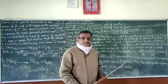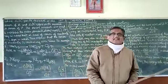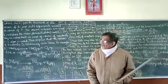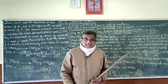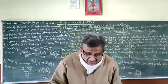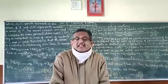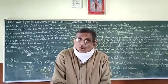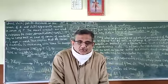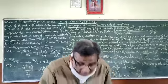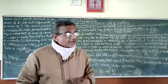In the last video, I told you that for the reaction R turning to P, the rate of reaction is equal to minus delta R over delta T, or the rate of reaction can also be equal to delta P over delta T.